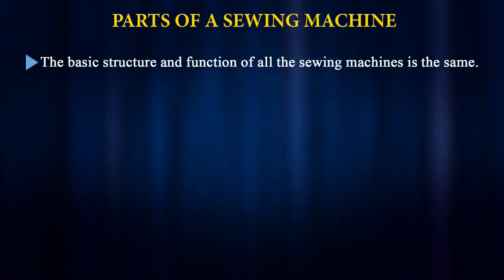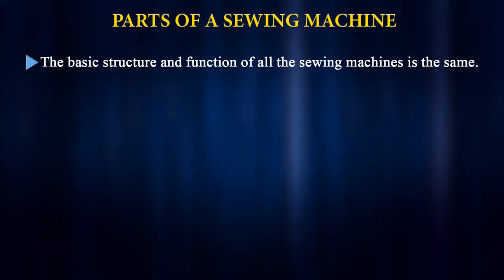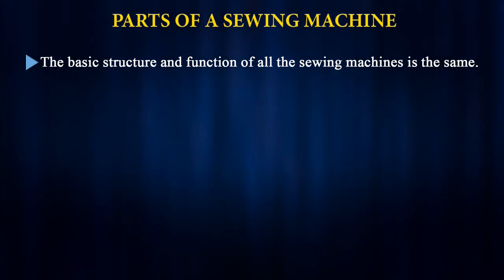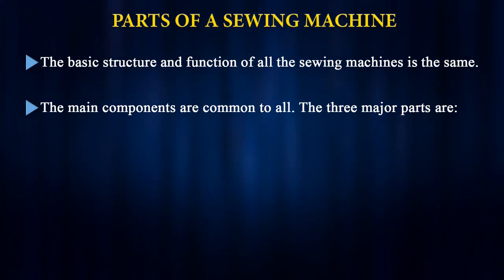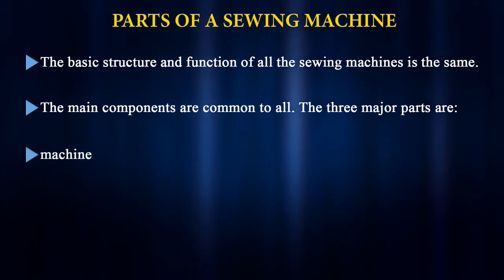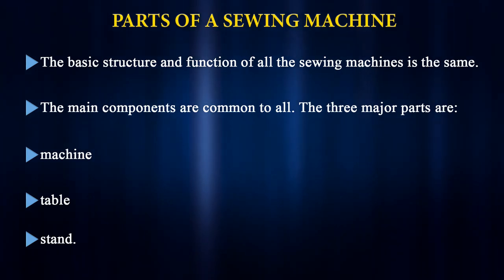Now that we know the different types of sewing machines, let us look at the different parts of a sewing machine. The basic structure and function of all sewing machines is the same — the method of operation differs but the function is the same. The main components are common to all three machine types. There are three major parts: the machine head, the table, and the stand.